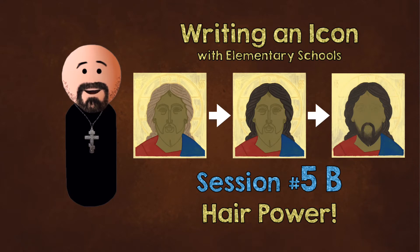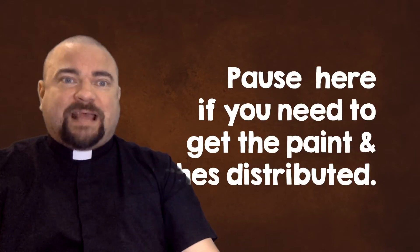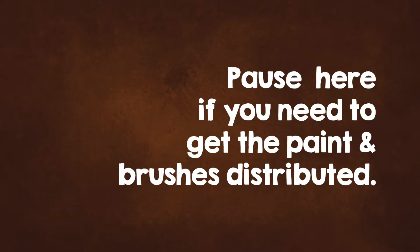Welcome to writing an icon with elementary schools — this is 5B, the session for older kids. We're going to need dark brown paint, so go ahead and get that. Everything that's not painted is the hair, so you can go ahead and grab your brushes and start filling in everything you see.